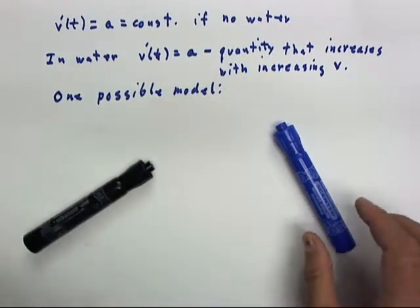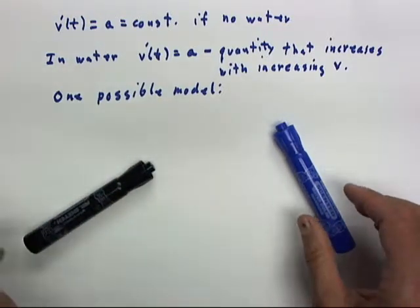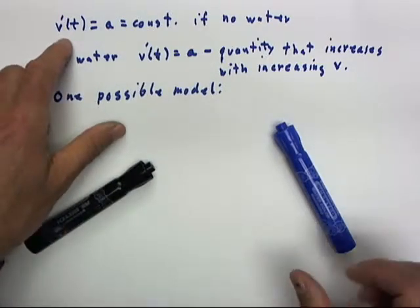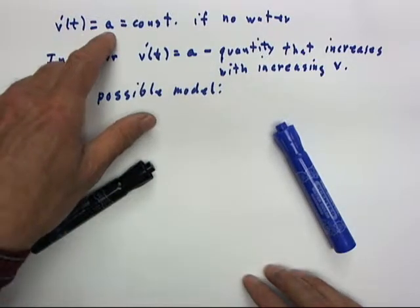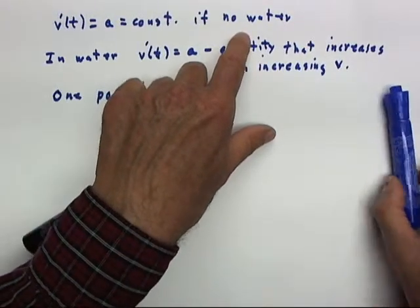We're going to develop one possible model for the ball moving through water. First of all, again, v' of t equals a equals constant if there's no water.